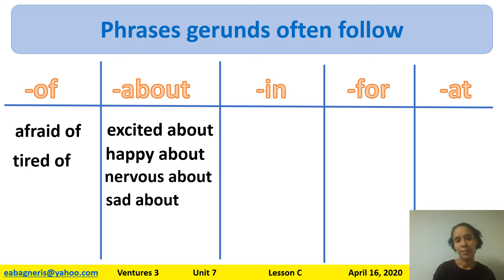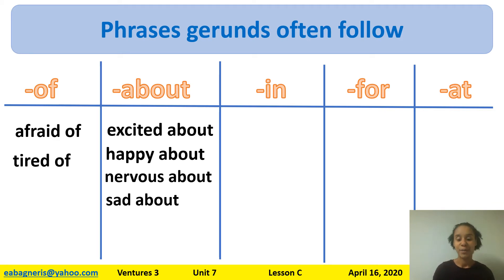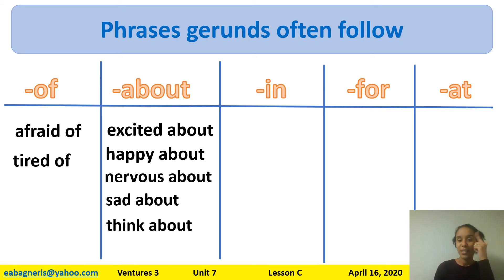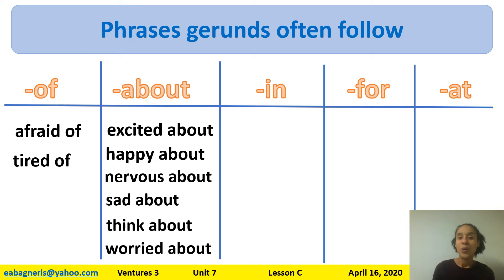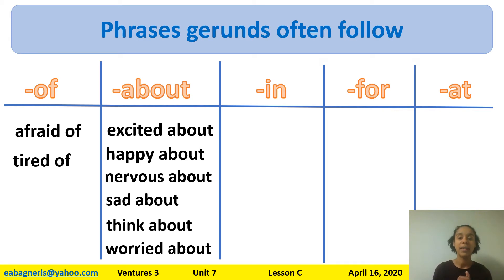Next is 'sad about' — just like we have 'happy about,' the opposite is 'sad about.' For example: 'I am sad about not having class.' Then 'think about' — thinking about something, like 'I am thinking about buying a new house' or 'I am thinking about what to have for dinner.' Finally, 'worried about' — worried is a lot like nervous, but usually means really scared, like going to the doctor and worrying about what he will say about your health.